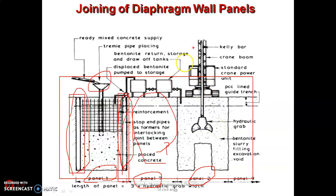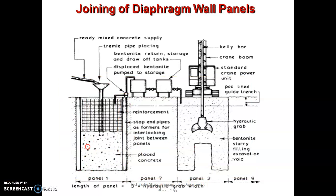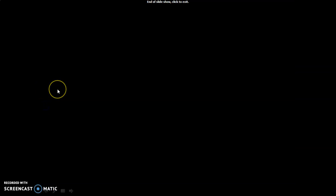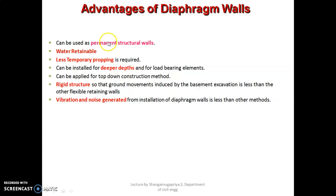In this picture you can also see the Kelly bar and the crane boom, along with the hydraulic grab used for excavation of the trenches. This is the sequence involved in diaphragm wall construction. The diaphragm wall can be used as a permanent structural wall and is a water-retaining wall. Only less temporary propping is required, and it can be installed to greater depths for load-bearing elements. It can also be applied for the top-down construction method.